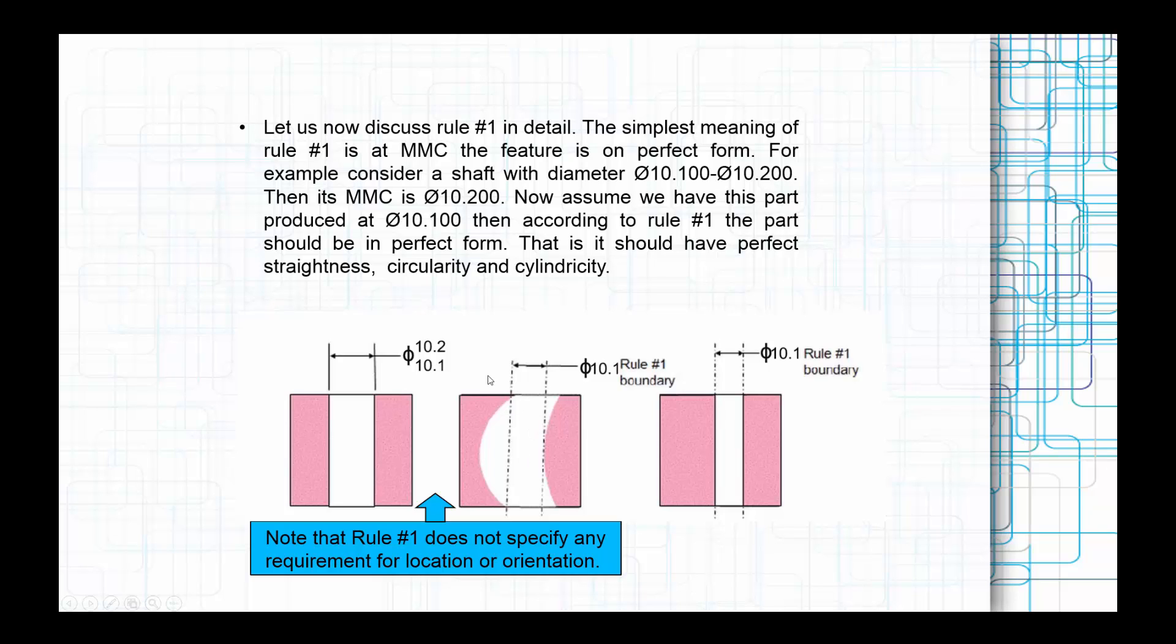If you manufacture this at a certain angle also, but your form is perfect, then still you have to accept because you have to specify one perpendicularity or other tolerance. So it's not about any other than straightness, circularity, and cylindricity. Please mind it.